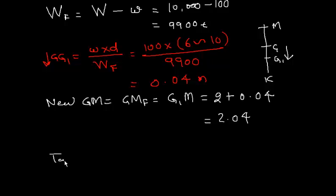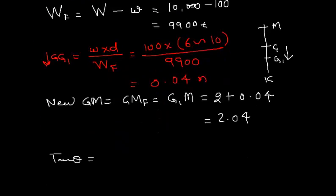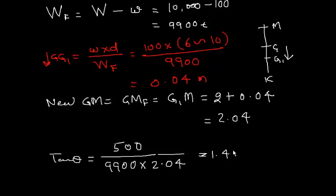I have everything, just put in the formula. Tan theta equals final list moment, which is 500 ton-meter, divided by WF which is 9,900 times GM which is 2.04. Let us use the calculator: 500 divided by 9,900 multiplied by 2.04. I get this value.